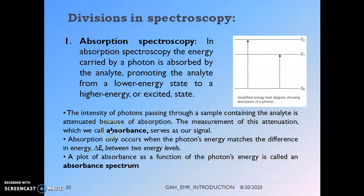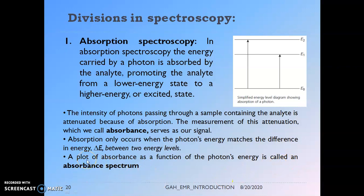If the energy difference ΔE matches a particular frequency of the electromagnetic radiation, the analyte takes up the energy — we call that an absorption process, and the whole technique is called absorption spectroscopy. The intensity of photons passing through a sample containing the analyte is attenuated due to absorption. This attenuation, called absorbance, serves as our signal. Absorption only occurs when the photon's energy matches the difference ΔE between two energy levels. A plot of absorbance as a function of the photon's energy is called an absorption spectrum.